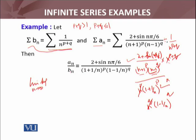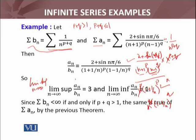Now I need to calculate the limit superior and limit inferior of this sequence aₙ/bₙ as n → ∞. As n → ∞, 1/n → 0, so (1 + 1/n)ᵖ → 1 and (1 − 1/n)ᵍ → 1. The term sin(nπ/x) is an oscillatory sequence — its maximum value is 1 and minimum value is −1. Therefore, the limit superior is 2 + 1 = 3, and the limit inferior is 2 − 1 = 1.